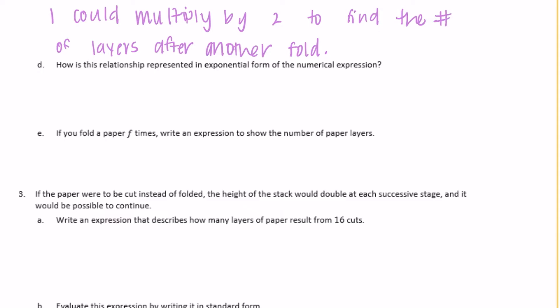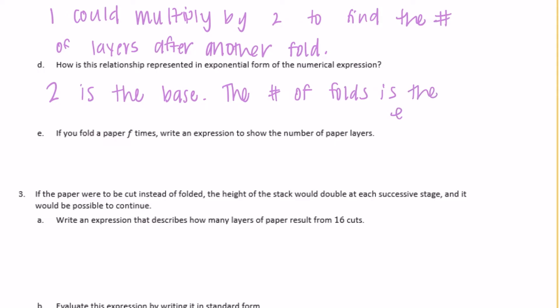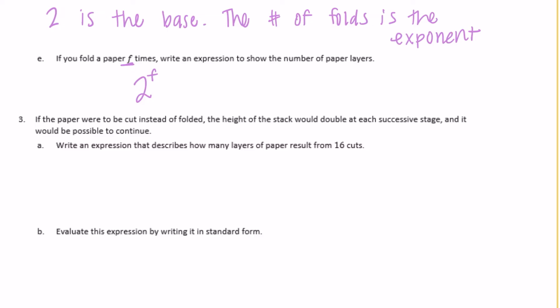D: how is this relationship represented in exponential form? We use 2 as the base, and the number of folds is the exponent. E: if you fold a paper F times, write an expression to show the number of paper layers. 2 is the base and the number of folds is the exponent, so it would be 2 to the F power layers of paper — insert however many times you fold it for F.